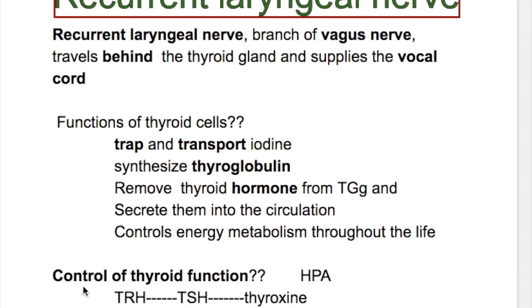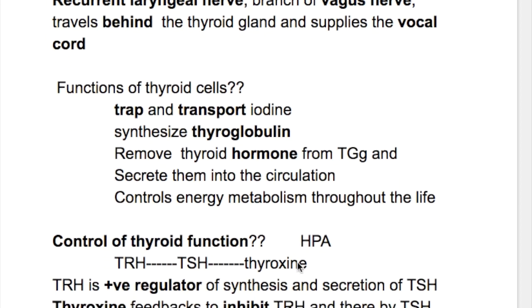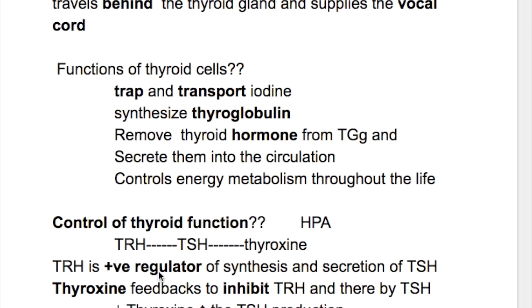What's the control of thyroid function? It is through the hypothalamic-pituitary axis. The hypothalamus produces TRH, which acts on the pituitary to produce TSH, which in turn stimulates thyroxine production. TRH is a positive regulator of both TSH and thyroxine synthesis. Thyroxine feedbacks to inhibit both TRH and TSH, so a decrease in thyroxine increases TSH production.